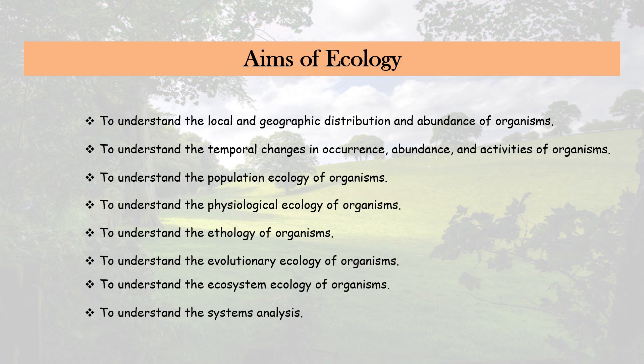What is the aim of ecology? Ecology is the science which gives us understanding about the local and geographical distribution and abundance of organisms — their habitat, their niche, their community, and biogeography. It also helps us understand temporal changes in the occurrence, abundance, and activities of organisms, whether seasonal, annual, or geological. It also helps us understand population ecology — the interrelations between organisms in populations and communities — and physiological ecology, meaning the structural adaptations and functional adjustments of organisms to their physical environment.